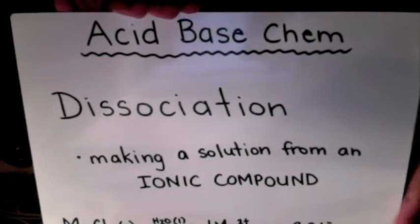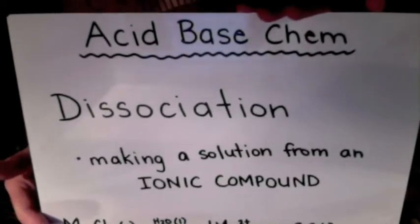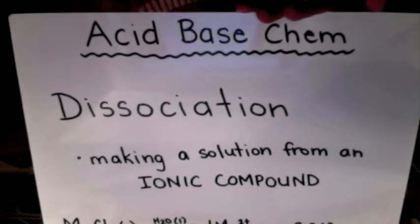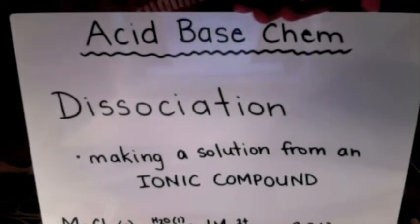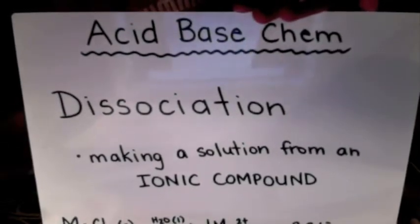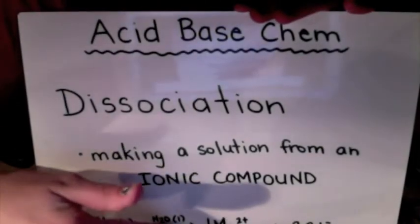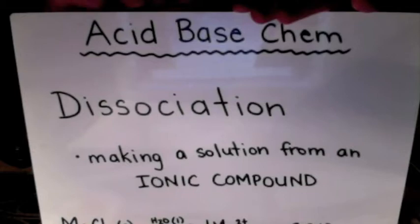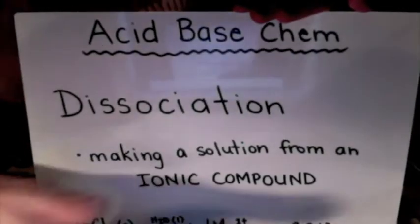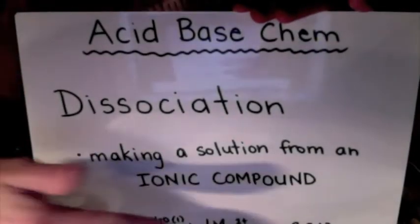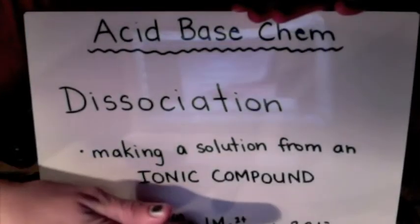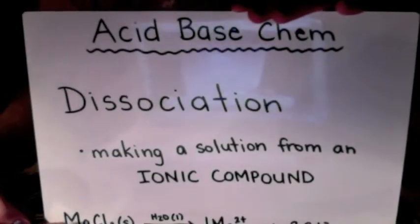What happens is the solid that we put in — magnesium chloride or whatever we put in — is placed into water, and it's going to become its ions. So it's going to form magnesium 2+ and chloride ion, which is 1-. You have to balance that equation, which is really important. So you need to have two chlorides and one magnesium, as well as one magnesium chloride.